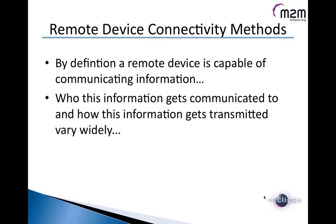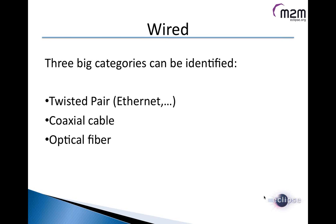Remote connectivity methods: by definition, a remote device is capable of communicating information, but how that information gets transmitted varies a lot depending on many aspects of the application. For wired transmission we consider three big categories: the most popular is Ethernet — technically twisted pairs. We also have legacy applications using coaxial cable, and we are already seeing optical fiber as a way of transmitting large amounts of information.